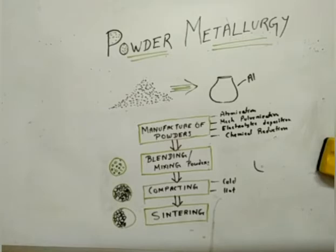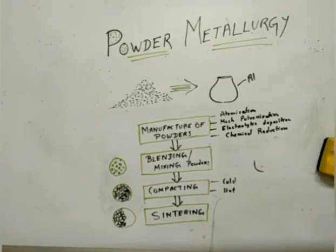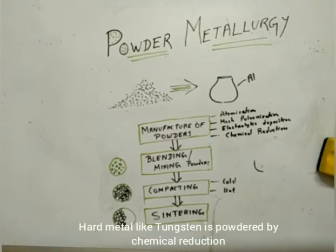The third method is electrolytic deposition. As anyone who has studied chemistry knows about electrolysis — the anode is the metal whose powder we want. Suppose I want copper powder: copper is kept as the anode and some other metal as the cathode, in an electrolytic solution. Copper from the anode gets deposited onto the cathode, and we can then collect the metal powders. In chemical reduction, we reduce the oxides of metals using reducing agents like hydrogen, which separates the metals from their oxides.